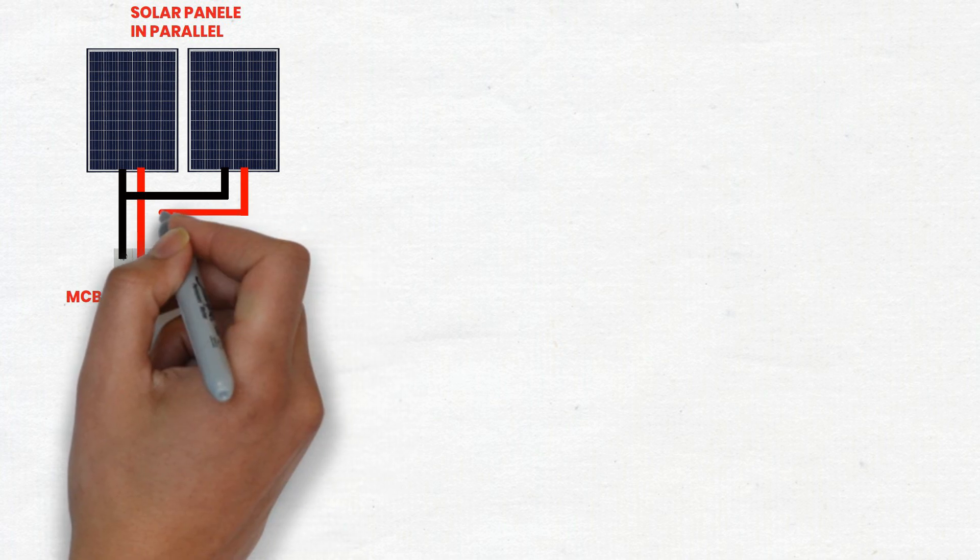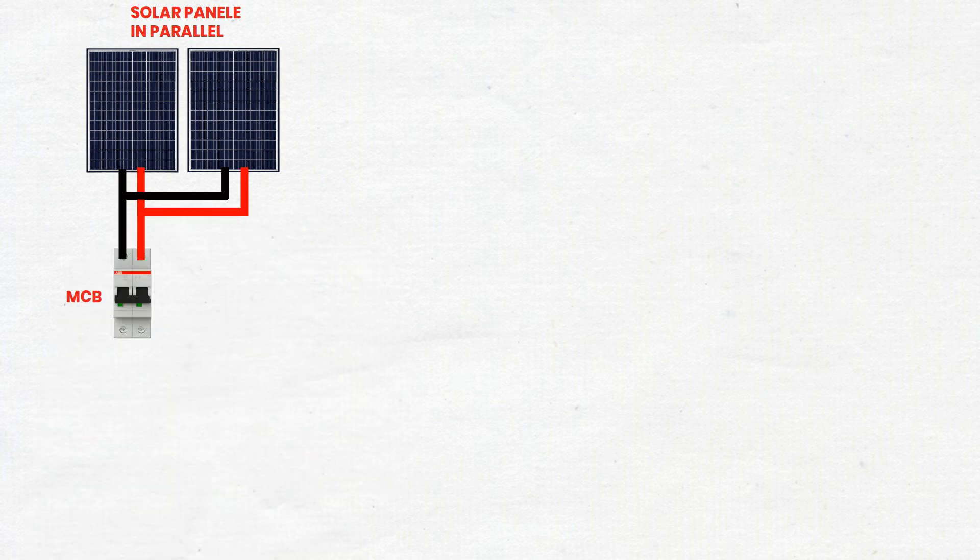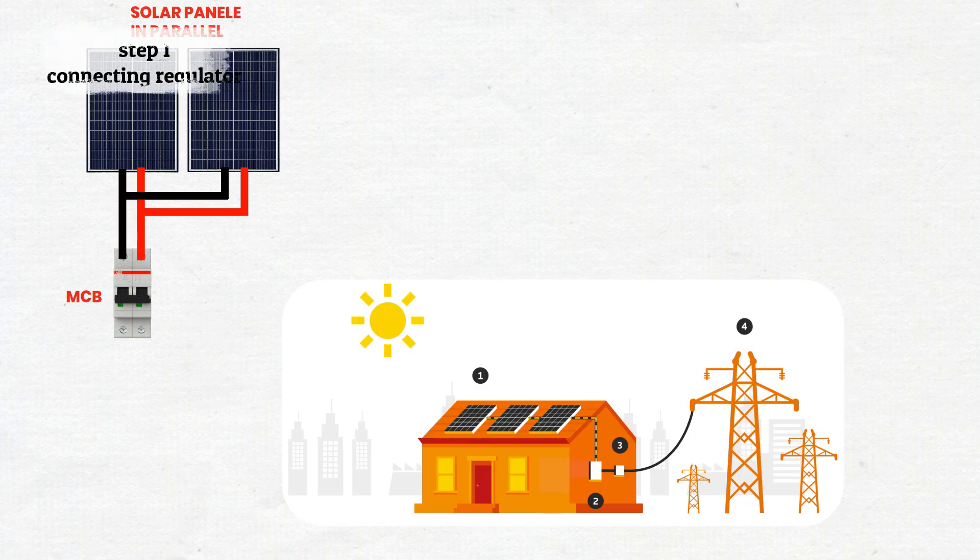MCB function: An MCB, miniature circuit breaker, is a protective device that automatically switches off electrical circuits during abnormal conditions such as overload or short circuit. Solar panels convert sunlight into direct current, DC, electricity.